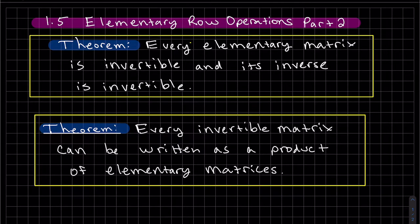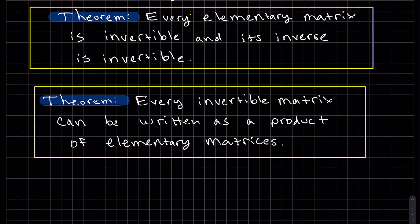So this theorem says every invertible matrix can be written as a product of elementary matrices. Let's look at the idea of this.